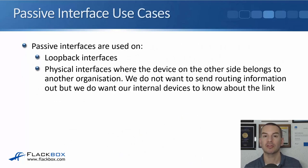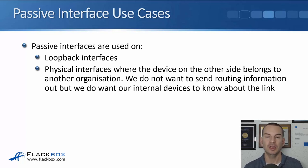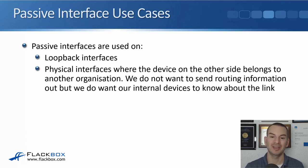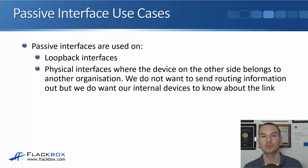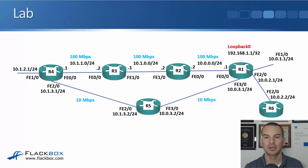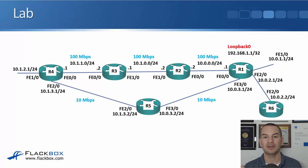The use cases for passive interfaces are: loopback interfaces, and physical interfaces where the device on the other side belongs to another organization, or where we don't want to send routing information to the other side but we do want our internal devices to know about that link. That was the theory for passive interfaces — let's configure them in the lab in the next lecture.